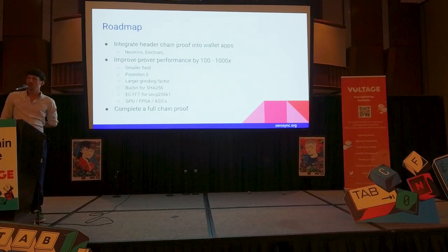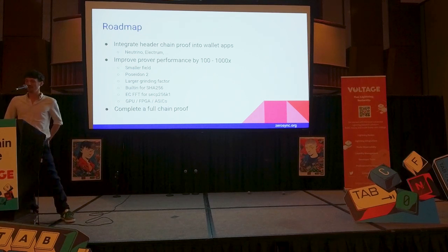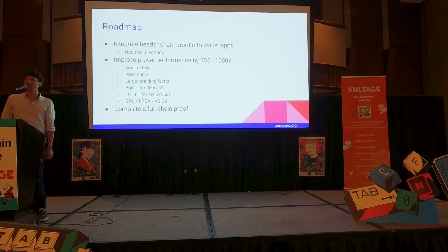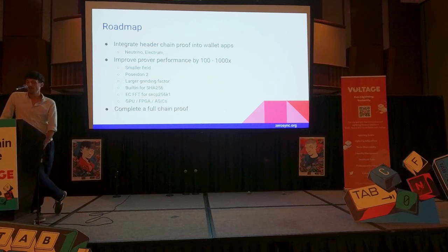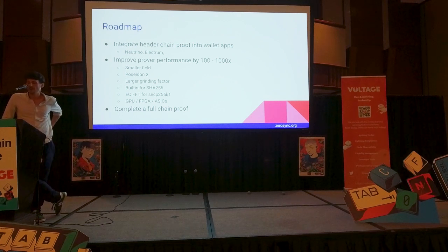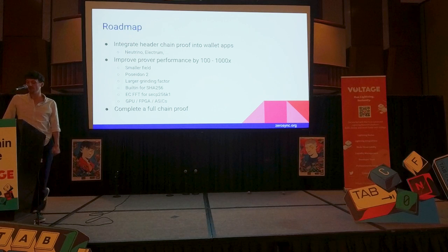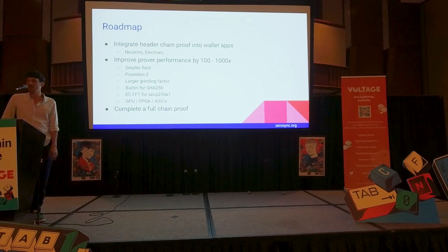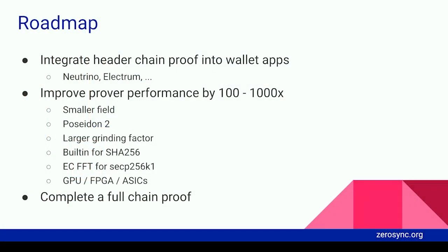A couple of minutes ago we completed the header chain proof, so now it's time to integrate it into wallet apps. We have already talked to Laolu from Lightning Labs, who is excited to build an experimental version of Neutrino and integrate it. We were also in contact with people from Electrum who might eventually be interested. Even more important, we want to build a complete full chain proof, but currently we are not quite there yet mostly because the proving is so expensive — the current setup would cost about half a million dollars in computation to prove the entire chain. So we will try to improve performance by around 2,000x, which is definitely possible.